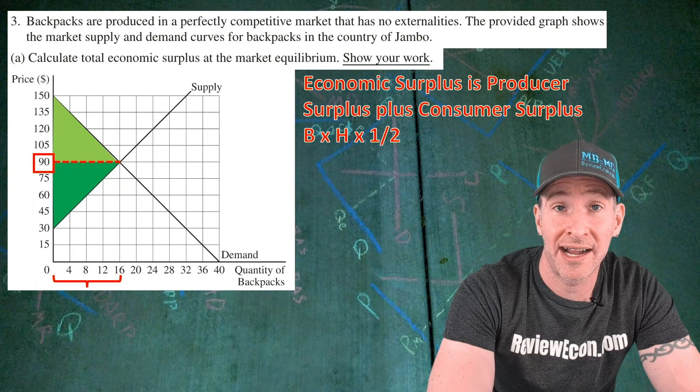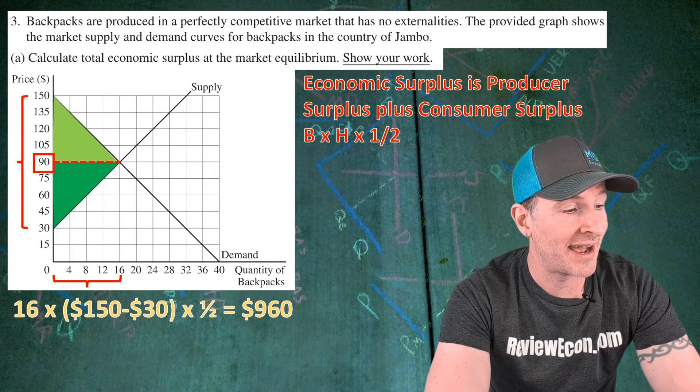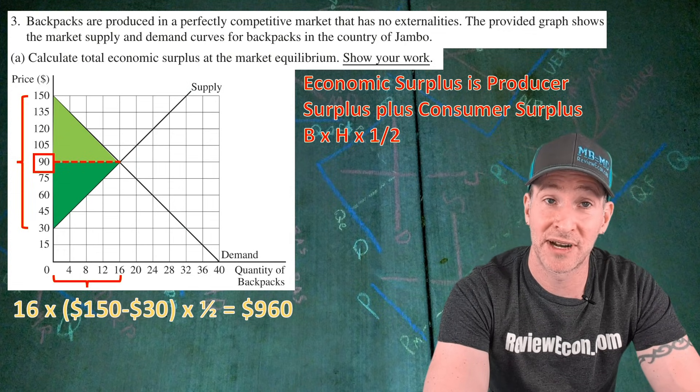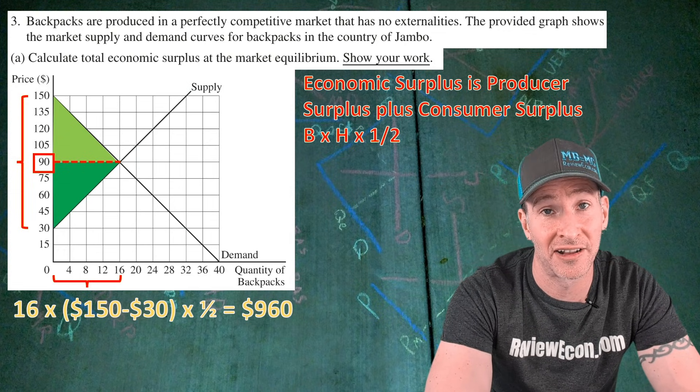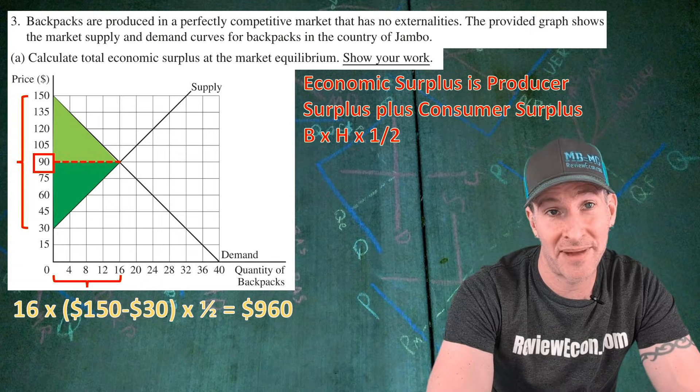Calculate the area of the overall triangle base times height times a half and that will be our economic surplus. Our base is 16 units. Our height is from $30 up to $150. Plug in the numbers and do the math. 16 times 150 minus 30 times one half equals $960 worth of economic surplus in this market at equilibrium. And if you have that math, you get your first point.